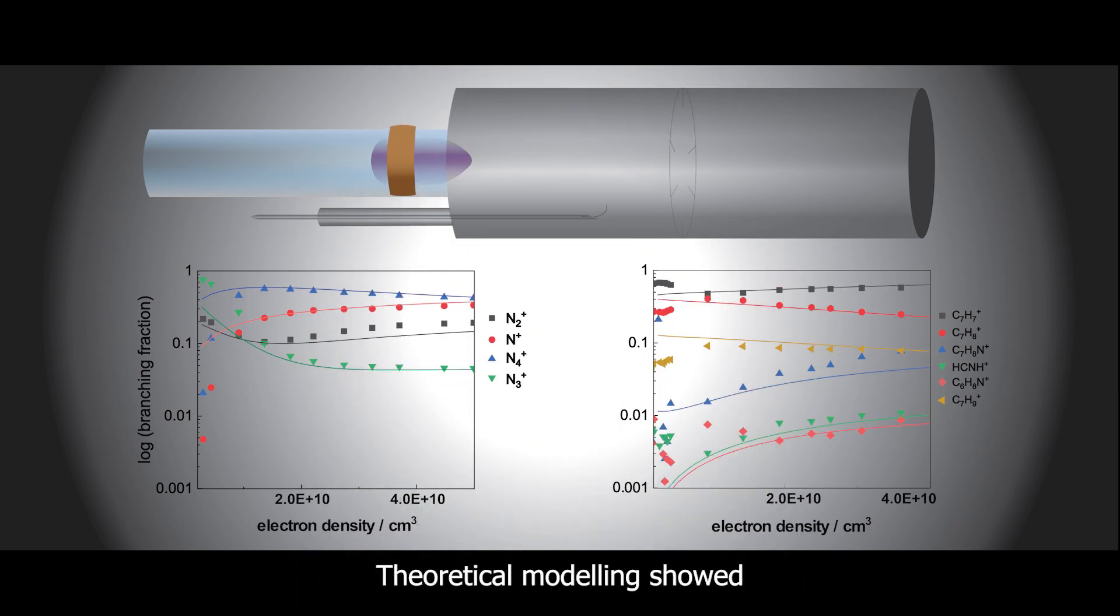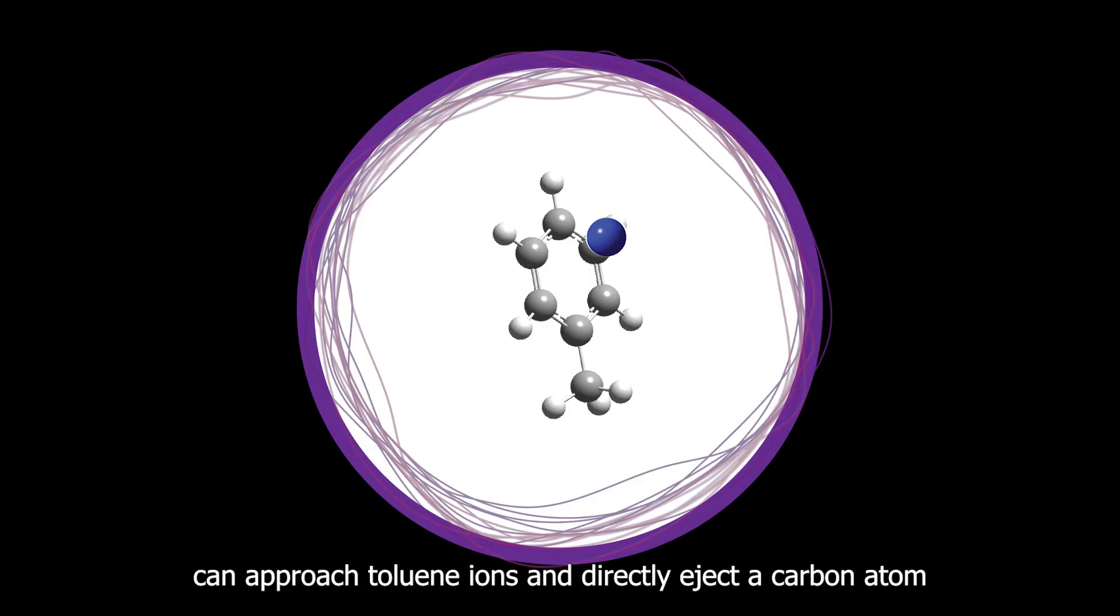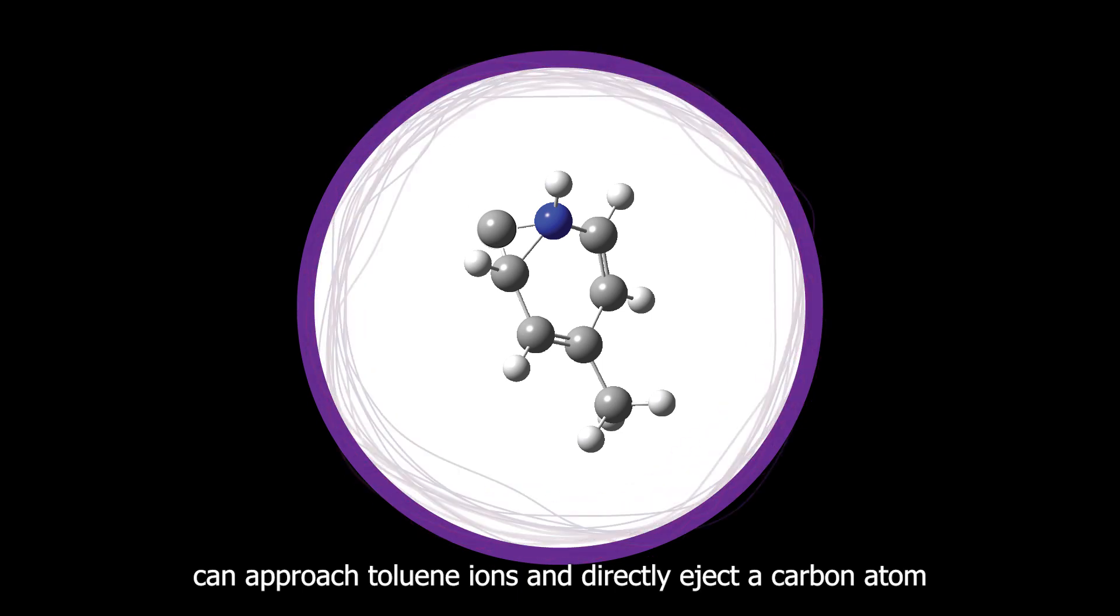Theoretical modeling showed that excited state nitrogen atoms can approach toluene ions and directly eject a carbon atom.